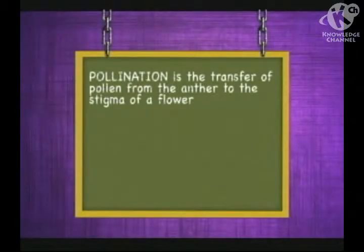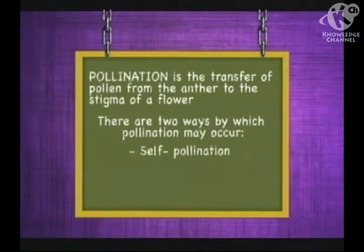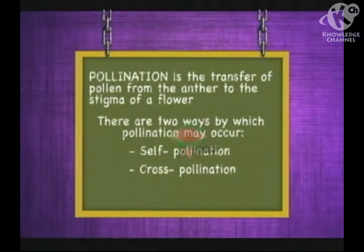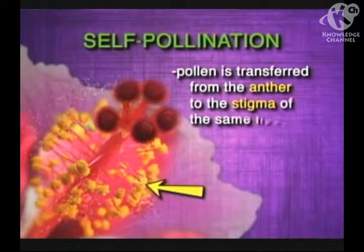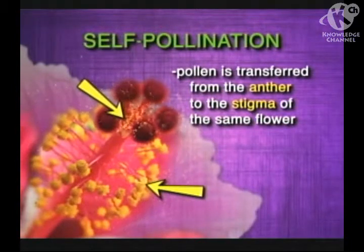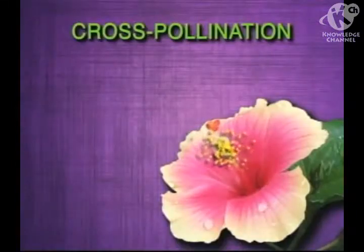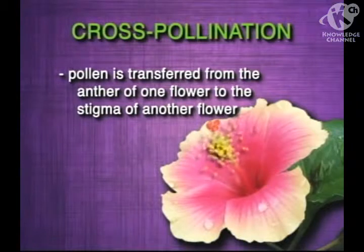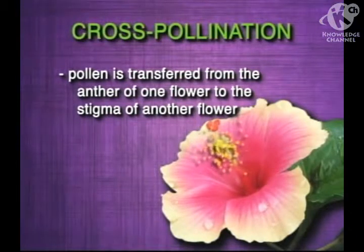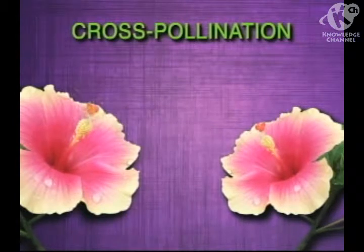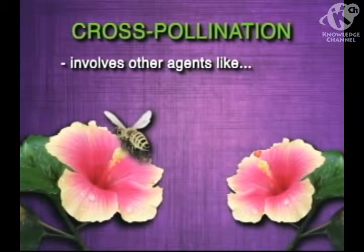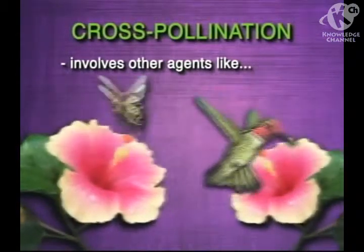Pollination is the transfer of pollen from the anther to the stigma of a flower. There are two ways by which pollination may occur: self-pollination and cross-pollination. In self-pollination, pollen is transferred from the anther to the stigma of the same flower. In cross-pollination, pollen is transferred from the anther of one flower to the stigma of another flower. Cross-pollination involves other agents like insects, birds, wind, and humans.